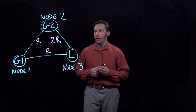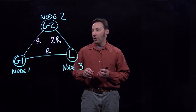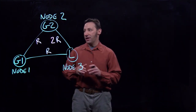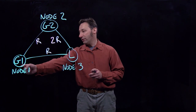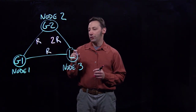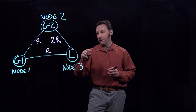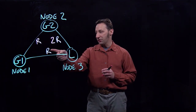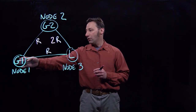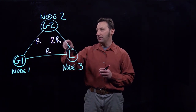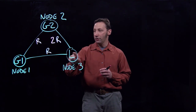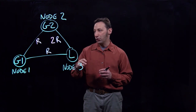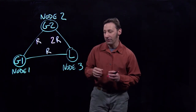We're going to do a second example of calculating power flow on a three-node network. This network has two generators: a generator at node 1, a generator at node 2, and a load at node 3. The line connecting node 1 to node 3 has resistance R, the line connecting node 1 to 2 has resistance R, and the line connecting node 2 to node 3 has resistance 2R — twice as high as either of the other two lines.